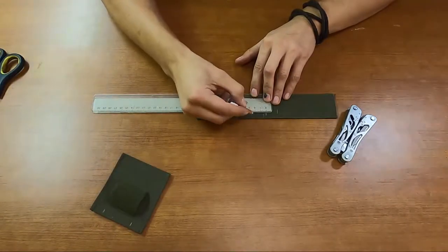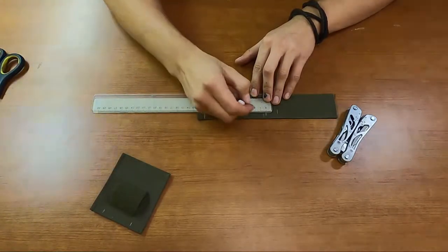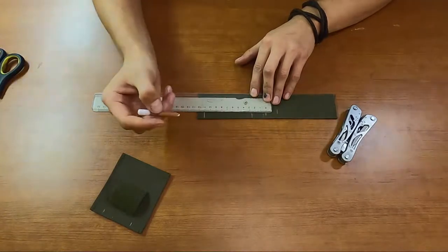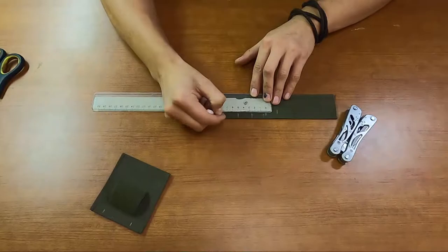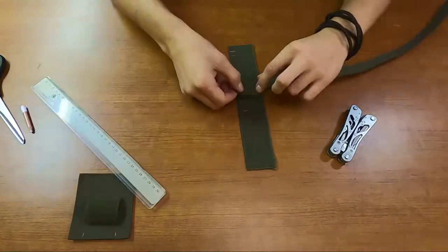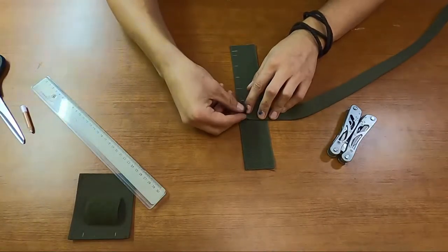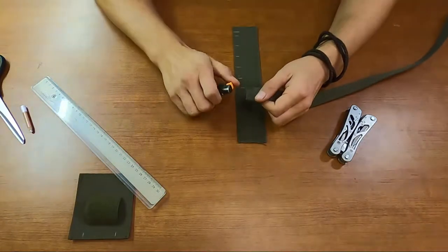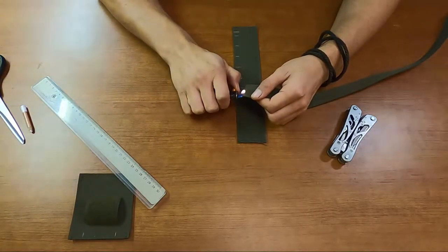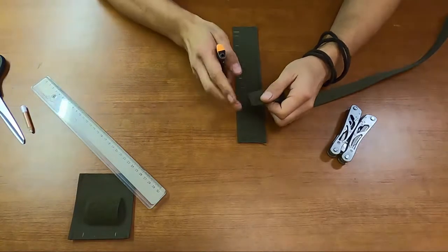We have to also prepare the PALS straps on the back. Make 4 sections here. To measure the length of each strap, you can simply put it on the 50 mm strap and mark the length plus 2 cm extra to tuck it.